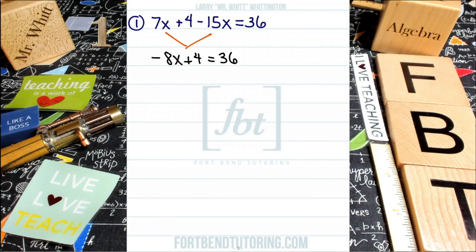So within that first step, we were able to combine those two terms that contained our variable x into one term that contains our variable x. The next thing we want to do is get that particular term by itself. The term that has our variable, in other words, the negative 8x, we want it by itself. But lo and behold, we have a positive 4 on the left side of the equation as well. We want to eliminate that.